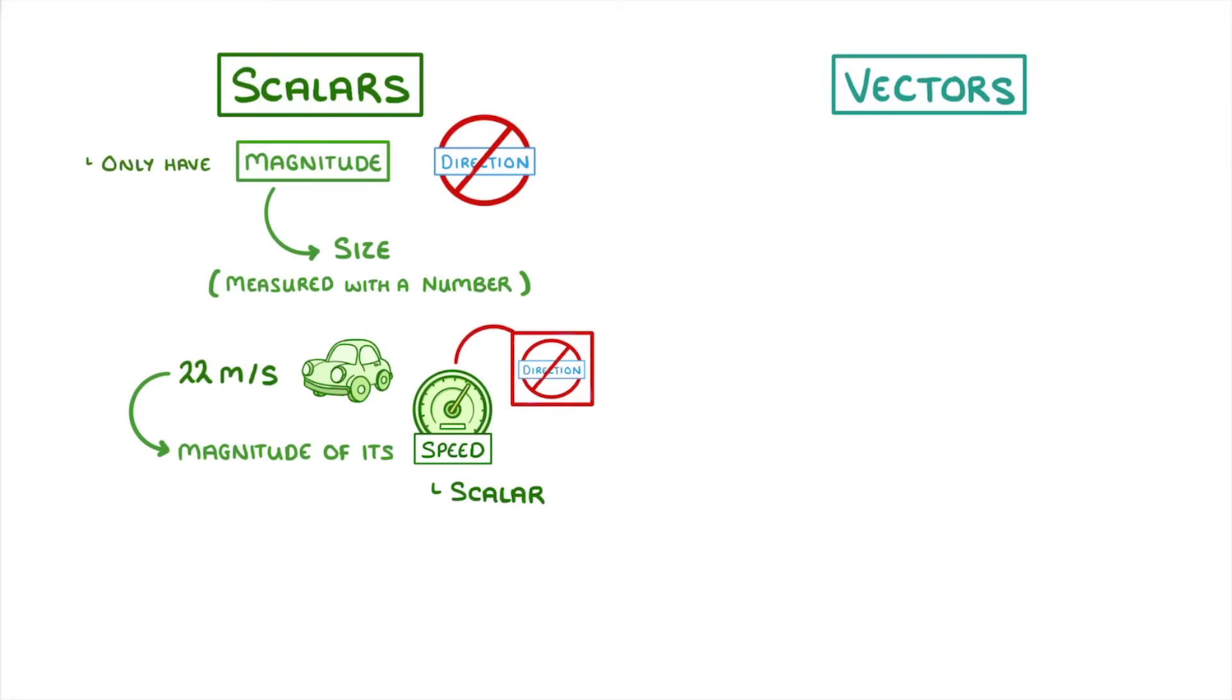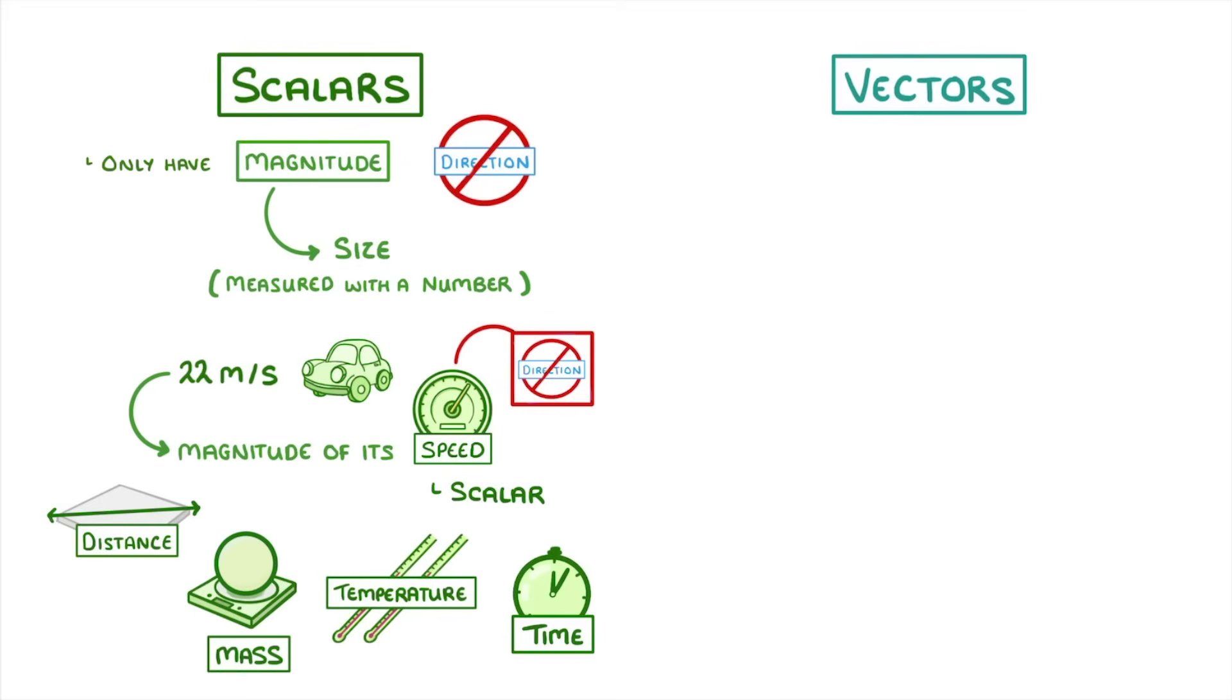Other scalar quantities include things like distance, mass, temperature, and time, although there are loads more.